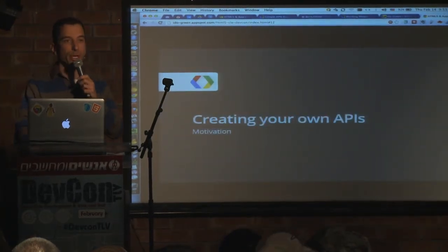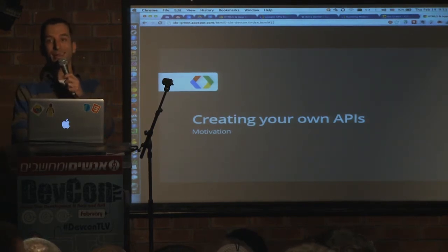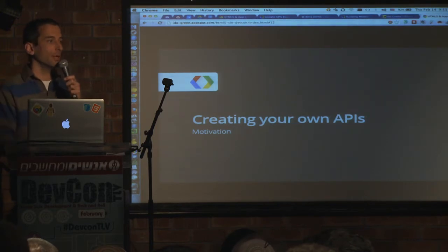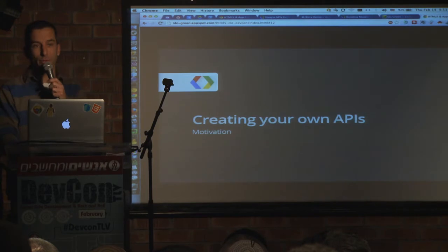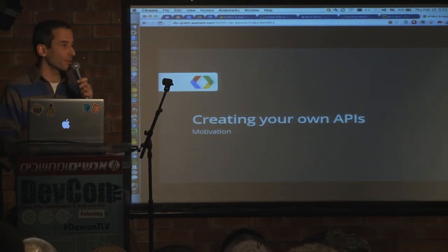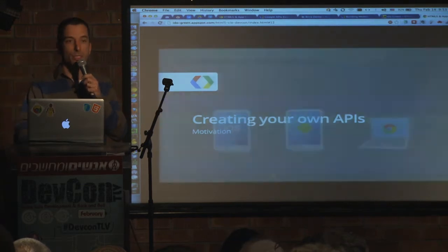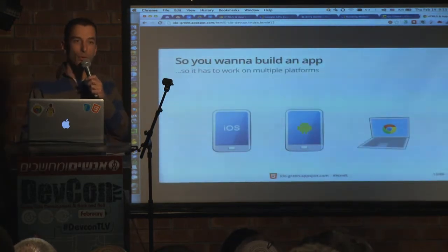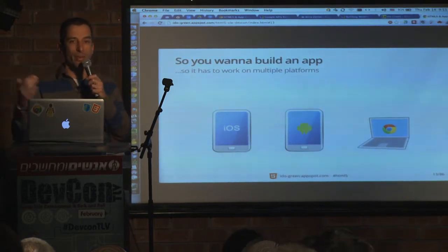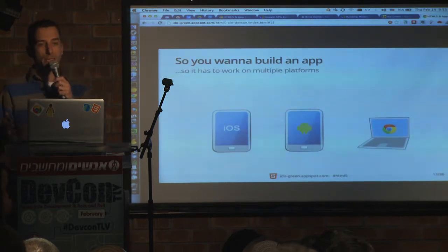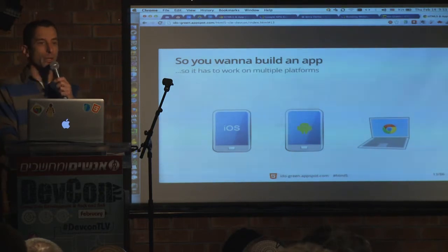So, creating your own API. This is a product we're using internally at Google, and I'm glad to see it coming out. It started like AngularJS, which is used heavily inside Google, and now we're exporting it and making it open source so the world can enjoy it too — Dart and many others. This one is built on top of Google App Engine and we call it Google Cloud Endpoints.